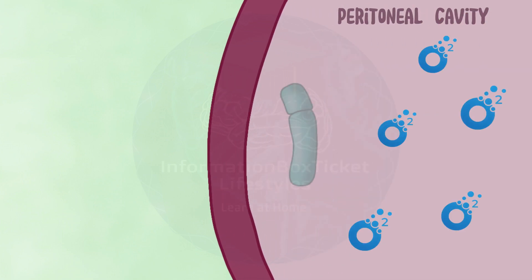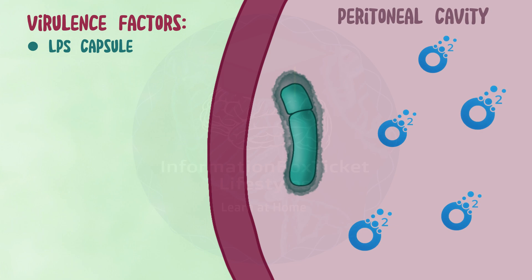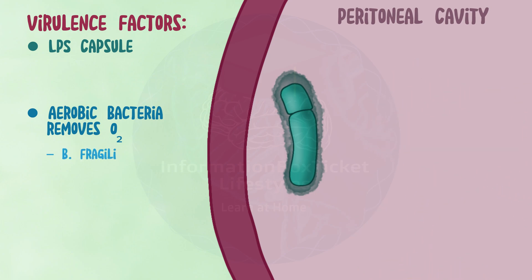Bacteroides fragilis can cause illness in the peritoneal cavity by activating its virulence factors. First, it possesses a lipopolysaccharide capsule (LPS) that it utilizes to connect to the peritoneal cavity's surface. Simultaneously, the aerobic bacteria that tagged along remove oxygen from the peritoneal cavity, allowing Bacteroides fragilis, an obligate anaerobe, to thrive.